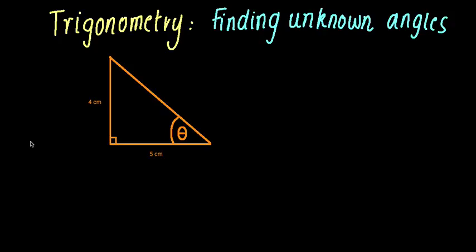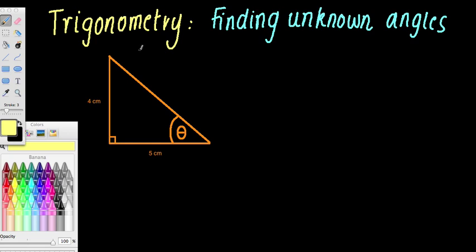Welcome back to another tutorial on trigonometry. What we're going to do in this tutorial is a little bit different to what we've been doing so far. By this stage you should be quite familiar with the sine, cos, and tan ratios. Remember you can use the SOH CAH TOA to remind you which ratio to use. What we're going to do is find an unknown angle in a right angle triangle. I've drawn a little triangle here with theta marked as the reference angle, and we've got two sides marked: four centimeters and five centimeters.